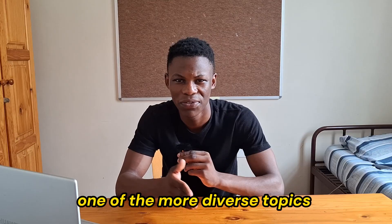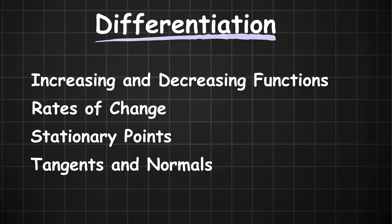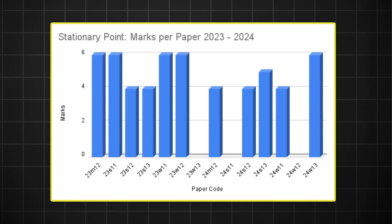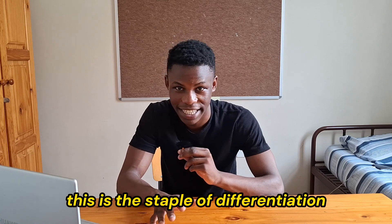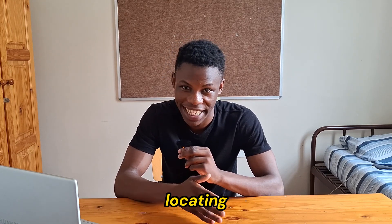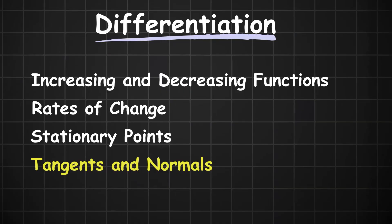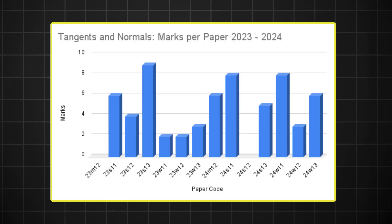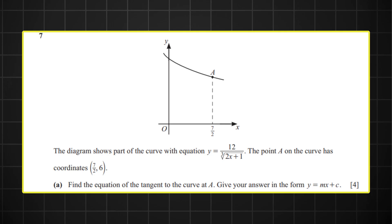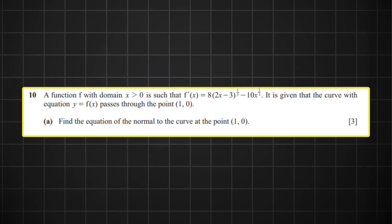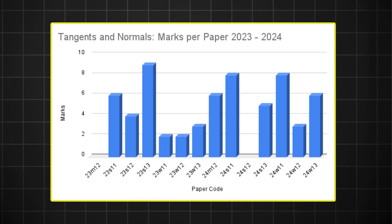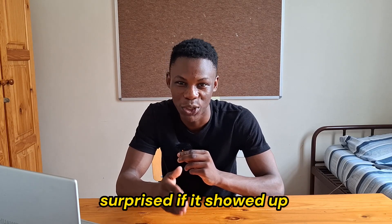Moving on to differentiation, one of the more diverse topics in P1. It has four main questions. The most popular is the stationary point question, which appeared in 11 of the last 14 papers — you should be comfortable locating and determining the nature of a stationary point. One question that has flown under the radar is tangents and normals, which appeared in 12 of the last 14 papers, making it more common than the stationary point question. It appeared in all three October papers.